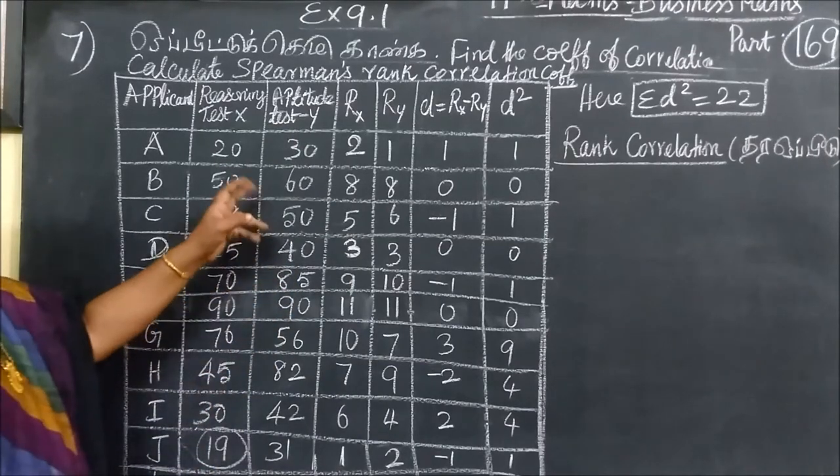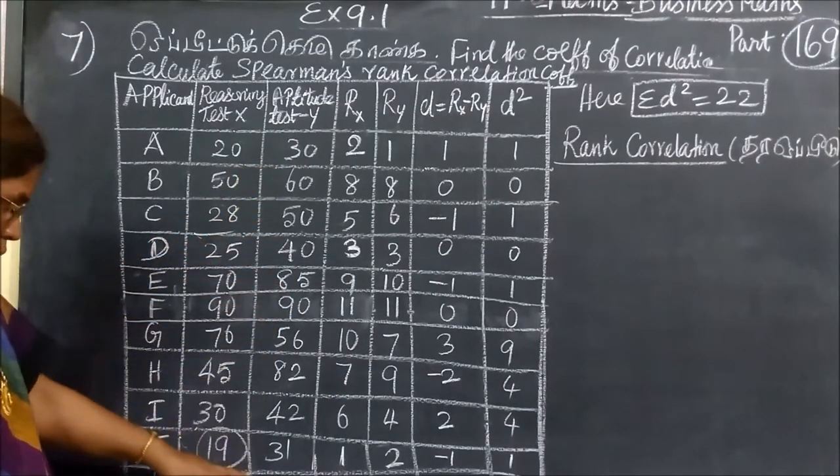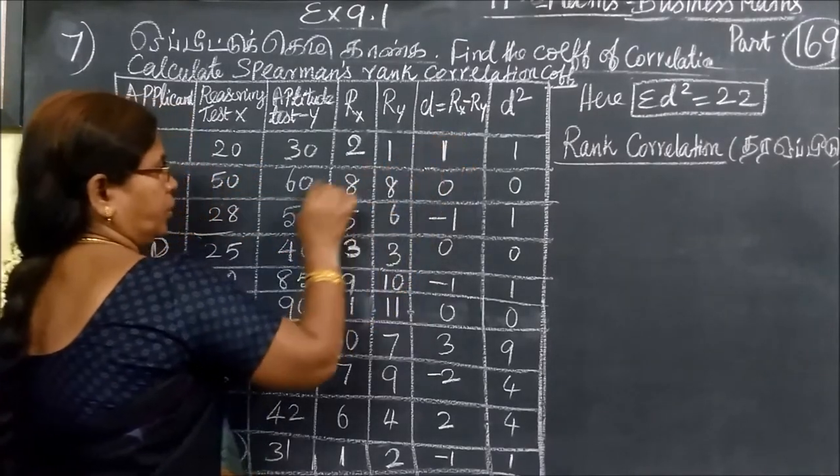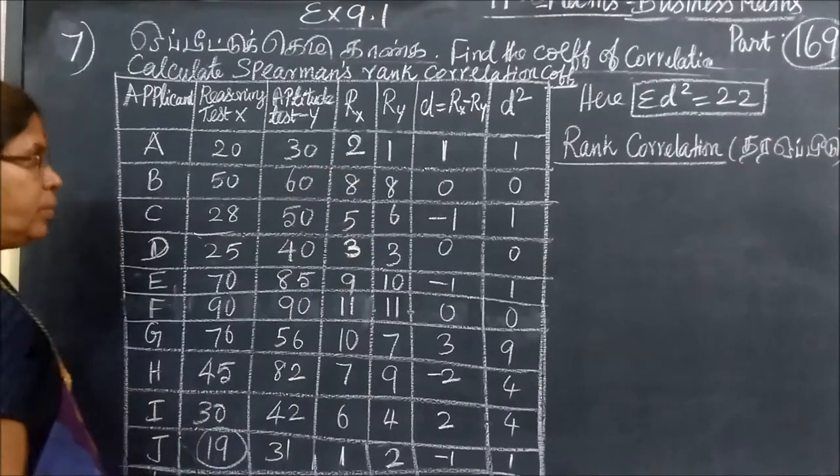Now this is the way we can do it. This is the smallest number. This is 30. So this is the way we can do it.